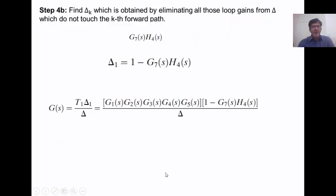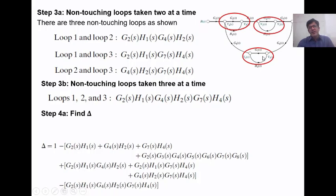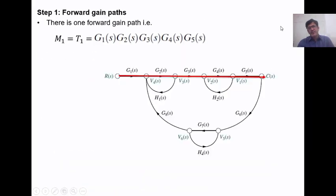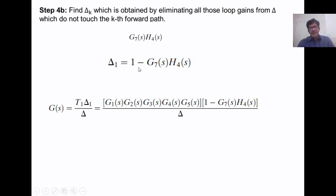Step 4b: delta-k is obtained by eliminating all loop gains from delta that do not touch the kth forward path. Looking at the signal flow graph, the loop with gain g7·h4 does not touch the forward path. So delta-1 equals 1 minus g7·h4, since we subtract that loop gain. The equation is now ready and we write the Mason's formula to obtain the transfer function.